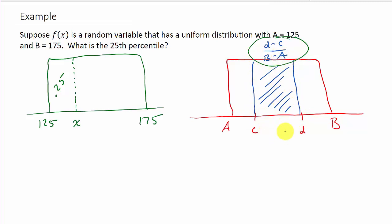Remember, it's the larger number minus the smaller number. In this case, D is going to be X and C is going to be 125 because we're looking for the area between these two numbers, the 125 and the X. And then of course we've got B is 175 and A is 125.